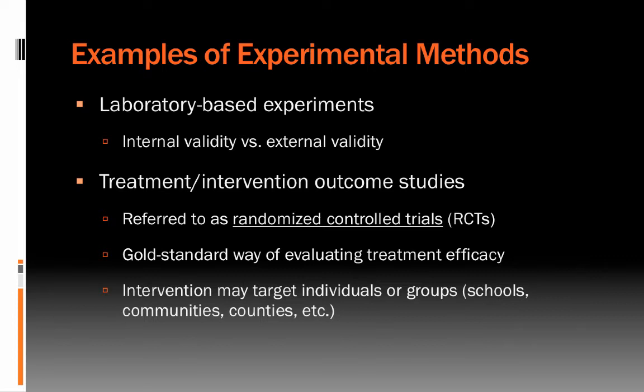There are also treatment or intervention outcome studies called randomized controlled trials, or RCTs. These are experiments typically done in the real world with real participants that evaluate the efficacy of a treatment — perhaps a medicine, a cognitive behavioral treatment program, or a health promotion intervention for a community or school system. Participants are randomized to either receive or not receive the treatment, and we evaluate the impact over time. A difference in outcomes gives us inference about the efficacy of that intervention.